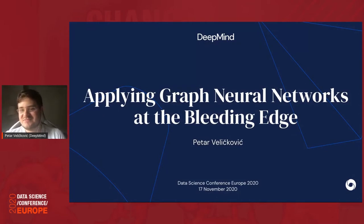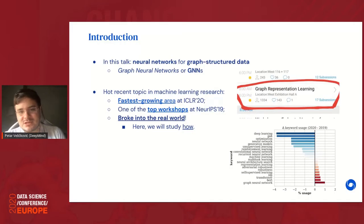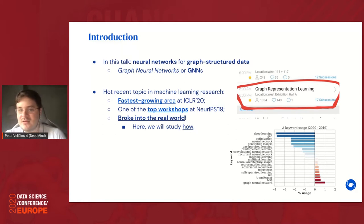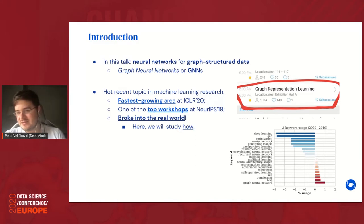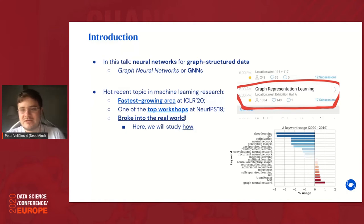In today's talk we will be covering fantastic graph neural networks and where to find them. Generally, graph neural networks are neural networks that operate over graph-structured data — we abbreviate them as GNNs — and they are a very hot topic in recent machine learning research. At the recent ICLR 2020 conference, the largest deep learning conference, GNNs were designated the fastest growing area by keyword count, and at NeurIPS 2019 and ICML 2020 they attracted the most workshop attendees.